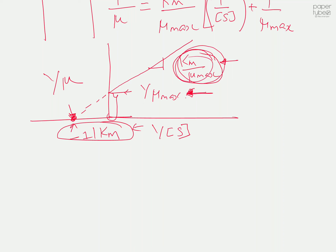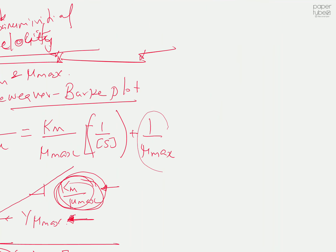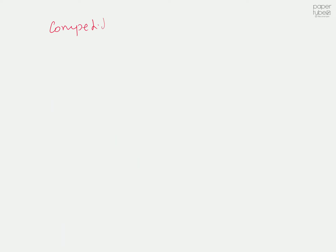I already explained this, so I'm just revising because you must know how to use and construct a Lineweaver-Burk plot and calculate these parameters. This is for an enzymatic reaction with just enzymes and no inhibitors. I also showed three different types of inhibitors: competitive, uncompetitive, and non-competitive inhibitors.